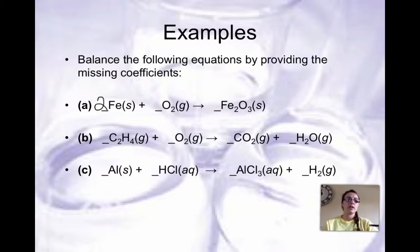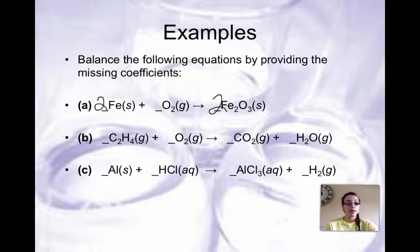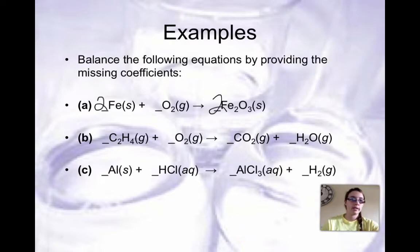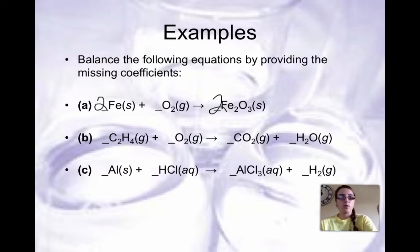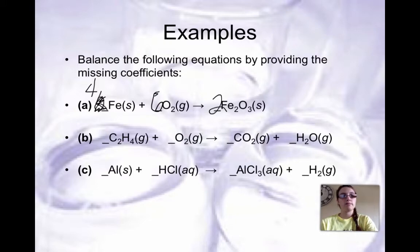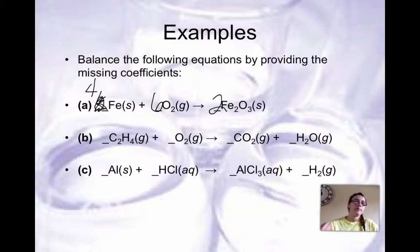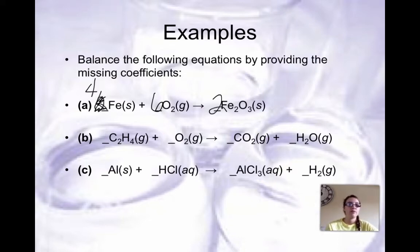If you ever have an odd number of something, it helps to double it. So let's double what we have on the right side — that makes our oxygens an even number, which is easier to work with. It's extremely important to use a pencil when you're balancing. Now we have four irons. Looking at the oxygens, we have six — but since it's O2, the coefficient should be three. Your final coefficients should be four in front of iron, three in front of oxygen, and two in front of iron(III) oxide. Pause the video, try examples B and C, then come back and check your coefficients.